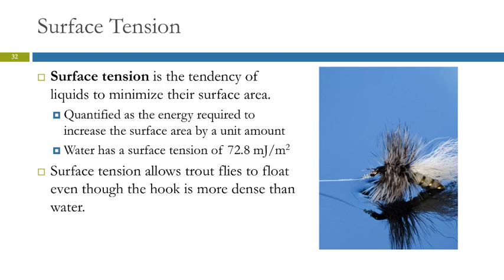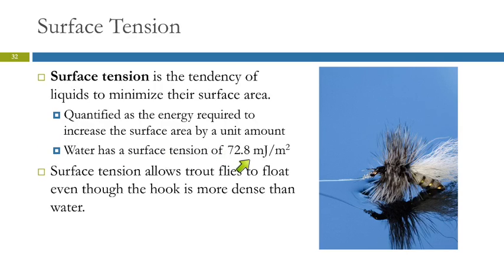Surface tension is the tendency of liquids to minimize their surface area. It's the energy required to increase the surface area by some unit amount. Water has a surface tension of 72.8 millijoules per square meter.